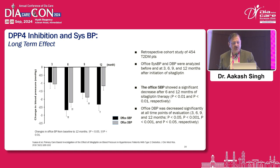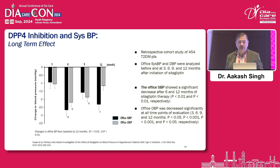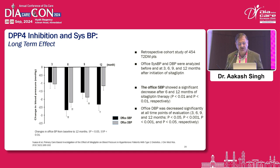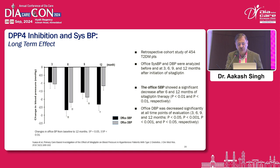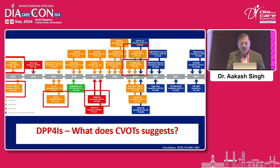DPP-4 inhibition also leads to systolic BP reduction. In this study, which lasted around 12 months, there was a gradual reduction in blood pressure — the systolic blood pressure is reduced to the tune of 2 to 3 mmHg and diastolic by 1 to 2 mmHg, which is a favorable effect. Though the reduction is modest, it translates into a good reduction in CVD events like stroke.